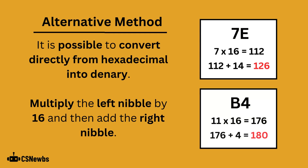There is an alternative method which allows you to convert directly from hexadecimal into decimal. You multiply the left nibble by 16 and then add the value of the right nibble. So for 7E: 7 times 16 gives 112. E is equal to 14, so you add 14 to 112 to make 126.